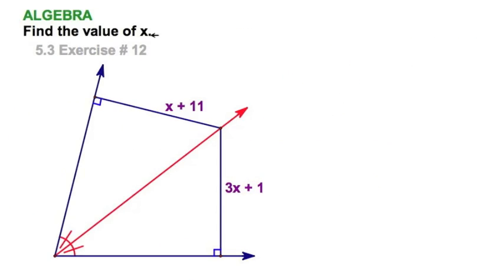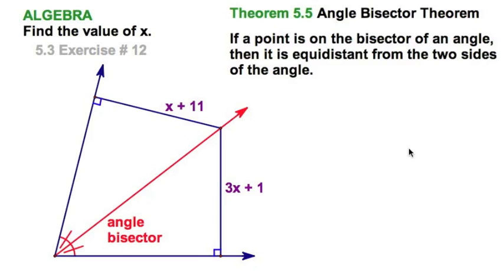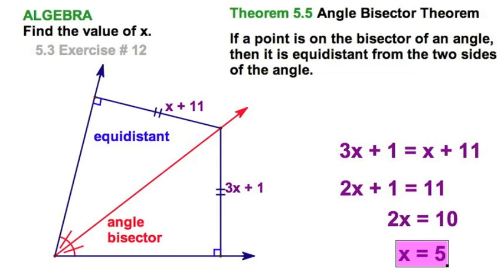Let's find the value of x. These tick marks tell me that this red ray is an angle bisector, and these right angles tell me that these segments are the distance from a point to the rays of the angle. The theorem tells me any point on the angle bisector is equidistant, so I can set the two expressions equal to each other. The rest is algebra.